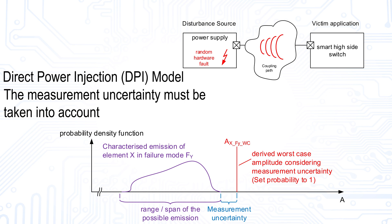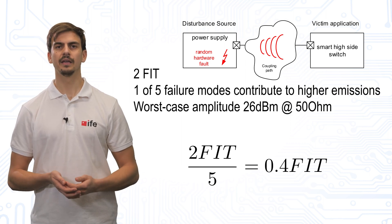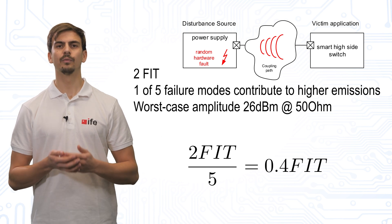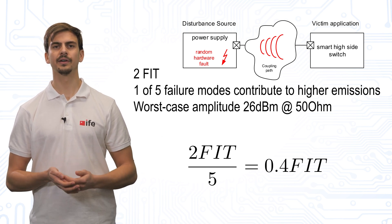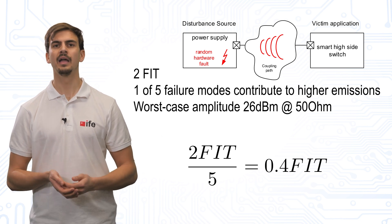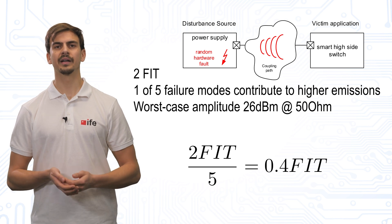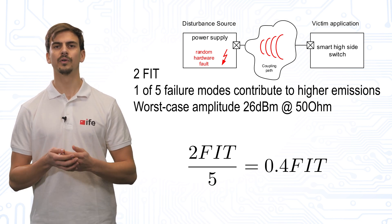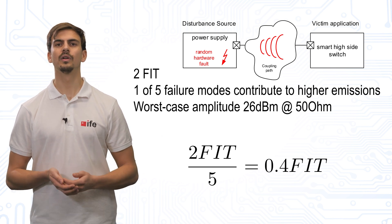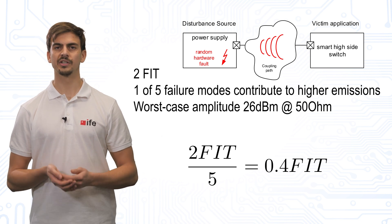Considering the example, the FIT rate of the element is given as 2 FIT and the failure modes are uniformly distributed, and the worst-case amplitude is a sinusoidal signal with an amplitude of 26 dBm at 50 ohms. This results in an electromagnetic phenomenon with a FIT rate for the oscillation of 0.4 FIT and an amplitude of 26 dBm with the model of direct power injection.